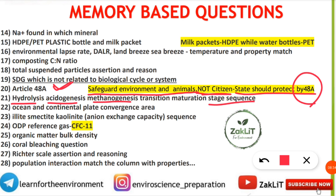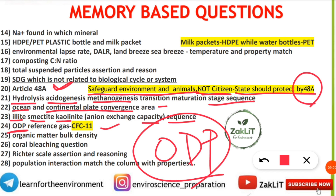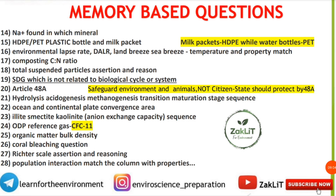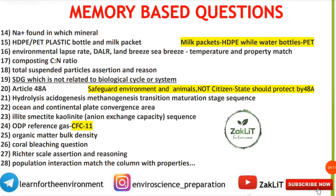A question asked what the convergence area of ocean and continental plates is called. From minerals, the anion exchange capacity sequence of illite, smectite, and kyanite was asked. On ozone depleting potential (ODP): the reference gas is CFC-11, whose ODP is 1. For global warming potential (GWP), the reference gas is CO₂ with a value of 1. Other questions covered organic matter and bulk density, coral bleaching, the Richter scale (used to measure earthquake intensity) in an assertion-reasoning format, and population interaction matching.